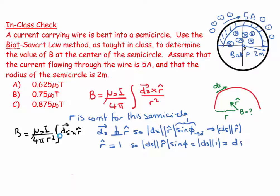So that horrible looking thing simplifies to become that B is equal to μ₀I over 4πr² times the integral of ds, which equals μ₀I over 4πr².